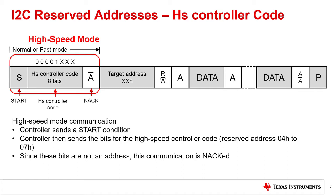First, the device starts in standard or fast mode. The controller sends a start condition. Then the first byte is sent with the reserved address used for the high-speed controller code. Again, this isn't an address and it uses the full 8 bits for the controller code. Because this value sent is not an address, there is no response from the device and it is not acknowledged or nacked.